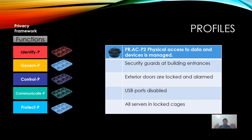For instance, you might have PR-ACP-2 with certain ingredients like security guards at building entrances, exterior doors are locked and alarmed, USB ports are disabled, and all servers are in locked cages. That might be perfectly appropriate for an organization that has a data center, but if you don't have a data center, those ingredients aren't going to make sense for you. So how do you go about figuring out what the appropriate ingredients are that you put in?